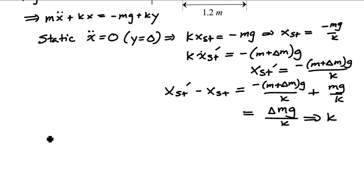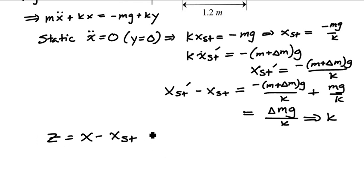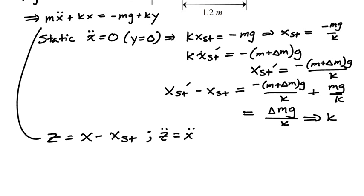I'll introduce a coordinate z equal to x minus x_static. Since x_static is constant, z double-dot equals x double-dot. Substituting back into the equation of motion gives: m times z double-dot plus k times z equals k times y.